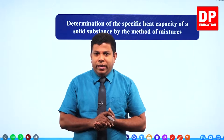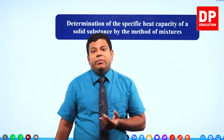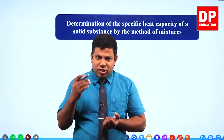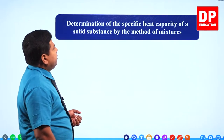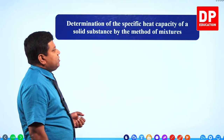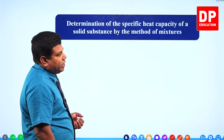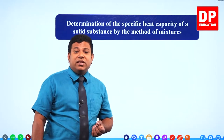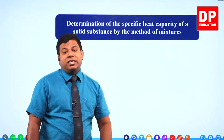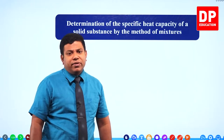Dear students, in physics, in the section heat, we are going to see another experiment. In this experiment, we will determine the specific heat capacity of a solid substance by the method of mixtures — finding the specific heat capacity of a solid substance, usually metals.